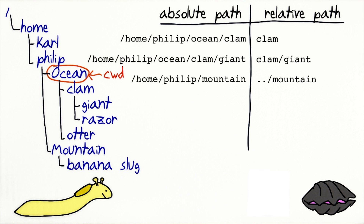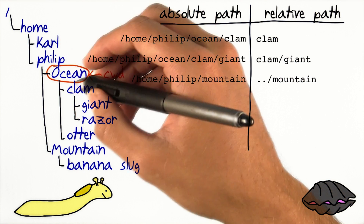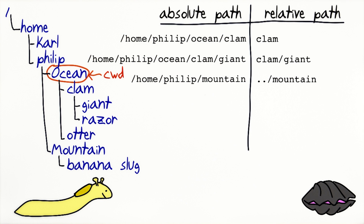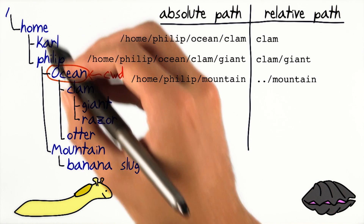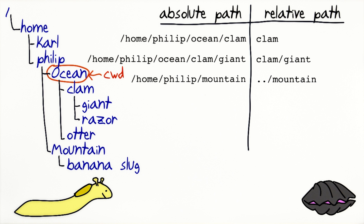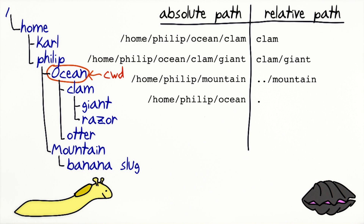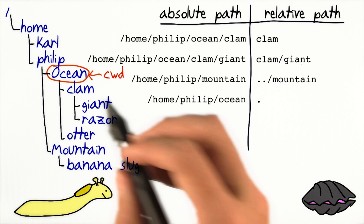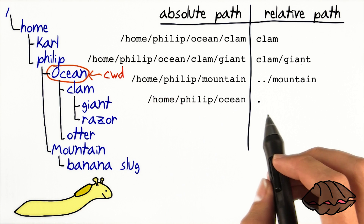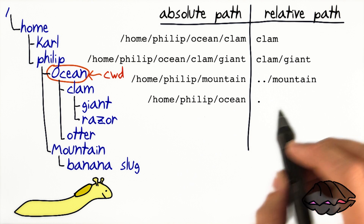You can also write relative paths for items that are closer to the root. The special directory entry dot dot points from a directory to its parent. So if you're in slash home slash philip slash ocean and you refer to dot dot, you're talking about the directory slash home slash philip. And if you refer to dot dot slash mountain, you're referring to slash home slash philip slash mountain. There's also a special entry which is just dot. Dot points from each directory to itself. For example, because our current working directory is ocean, if we use dot, that refers to slash home slash philip slash ocean.